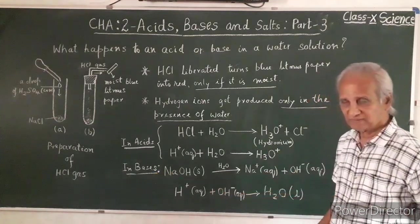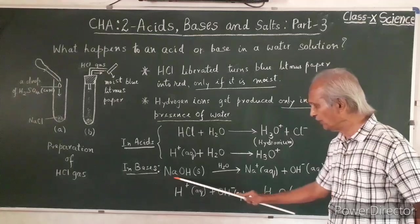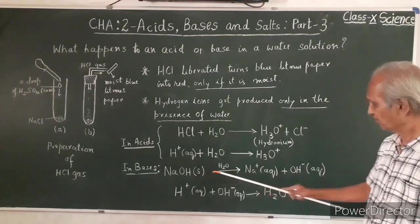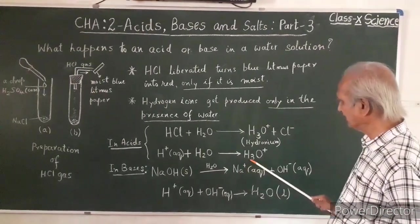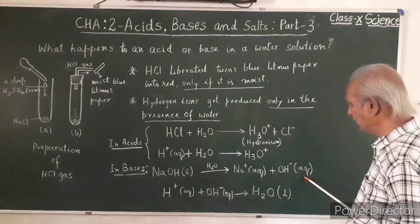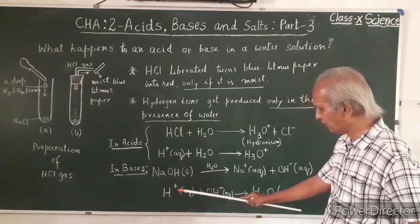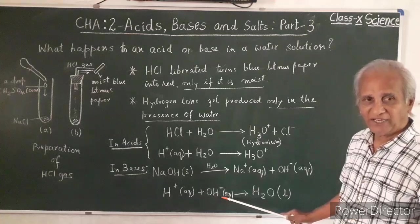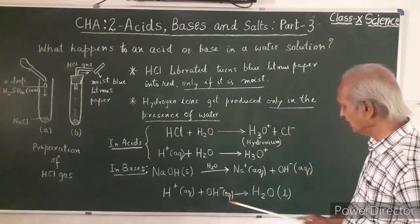In bases, what happens? Sodium hydroxide in solid state, when it gets moisture, H2O, you have Na positive aqueous plus OH minus in aqueous state. H positive joins with OH, hydroxyl ions or hydroxide ions, and that becomes water H2O. This is what happens in bases.